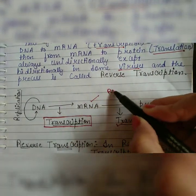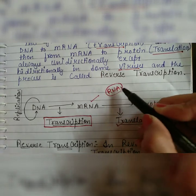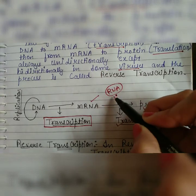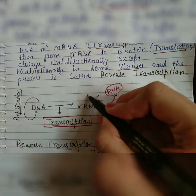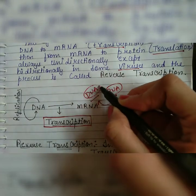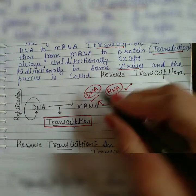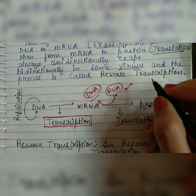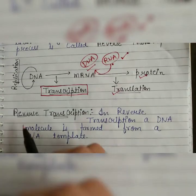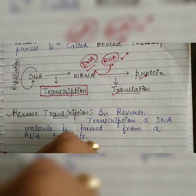In some viruses, RNA is present as a genetic material. So in those viruses, the RNA first forms a DNA molecule — a DNA molecule is formed from this RNA template — and after that proteins are formed. This process is called reverse transcription.